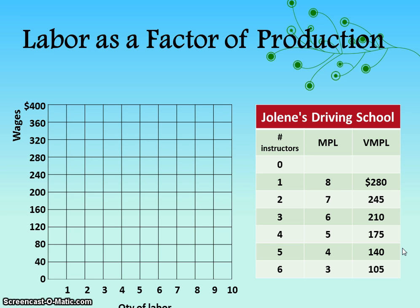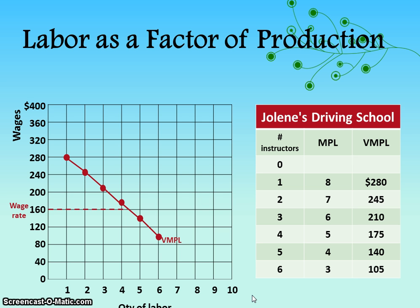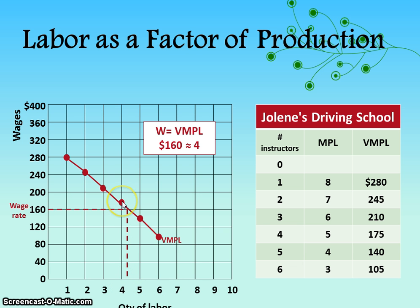When you do your problem set, you'll be asked to graph the VMPL. Wages go on the vertical axis and quantity of labor on the horizontal axis. You graph the VMPL for each worker, then draw a horizontal line at the wage rate — $160 in this situation — to see where it intersects the VMPL curve. It intersects at about 4.2 workers, so we backtrack to four rather than go on to five. The answer is four workers.